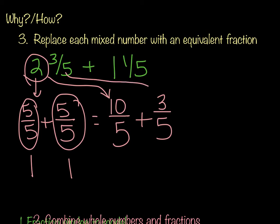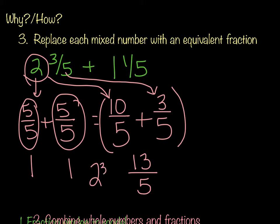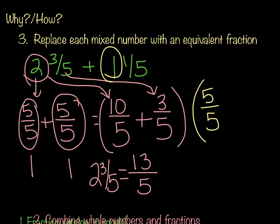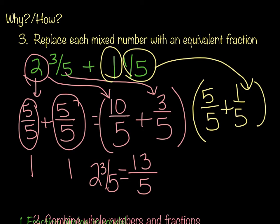So now this 2 has turned into 10 fifths, and we're going to add that to our 3 fifths, which was here. We're going to put that in parentheses, and that gives us 13 fifths. So basically what we're saying is 2 and 3 fifths is equal to 13 fifths. We're now going to take the mixed number 1 and 1 fifth, and we're going to change it. So my whole number 1 is going to be 5 fifths, and we're going to make our parentheses, and then we bring that 5 fifths back into the equation. And I do my 5 plus my 1, which gives me 6 fifths.